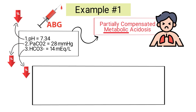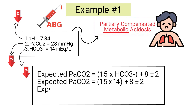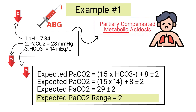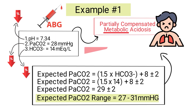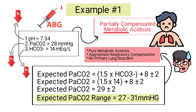Using Winter's formula: expected PaCO2 = 1.5 × 14 + 8 ± 2, which equals 29 ± 2. Therefore, the patient's expected PaCO2 range should be between 27 and 31. The patient's measured PaCO2 of 28 falls within the expected range, confirming that this patient has pure metabolic acidosis with appropriate respiratory compensation and no primary lung disorders.